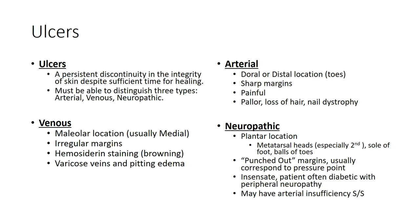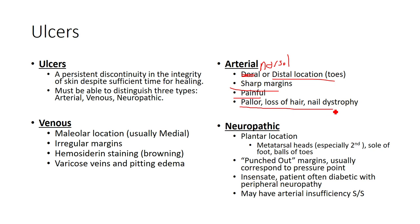We have three general types relating to the cardiovascular system: arterial lesions, venous lesions, and neuropathic lesions. Arterial lesions tend to be dorsal — not 'Doral,' which is a city in Florida — dorsal, or in distal locations in the feet. They typically have sharper margins, they're painful, and you may see pallor and other PAD signs. We also see nail dystrophy and loss of hair.